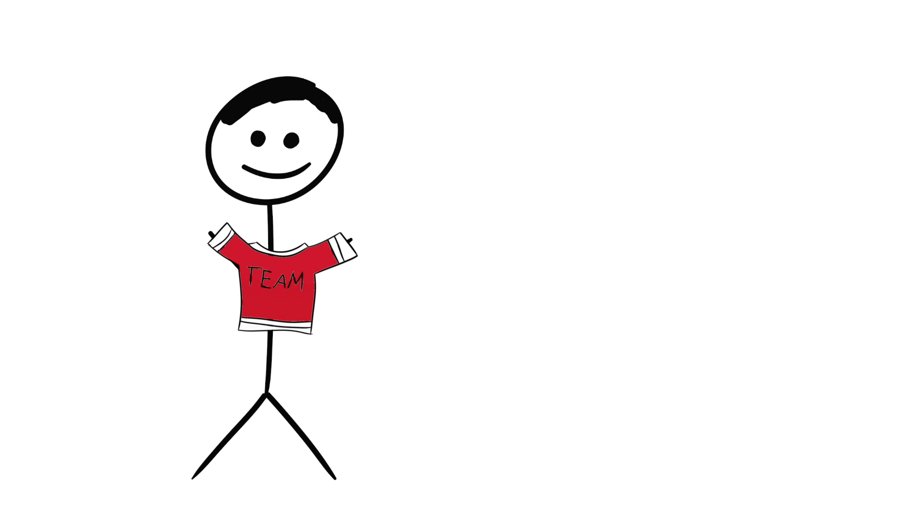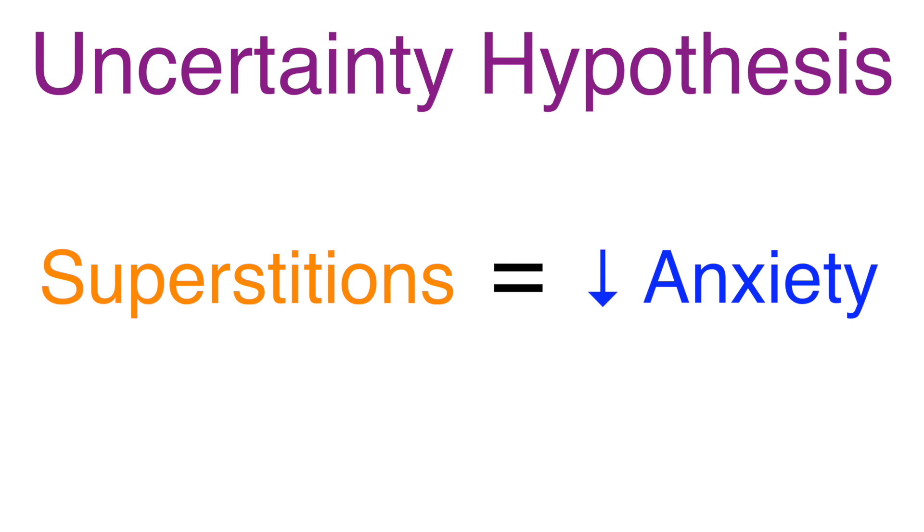People know that wearing their team's jersey won't affect the game, but doing so makes them feel like they have some part to play in their victory. Under the uncertainty hypothesis, superstitions act as a sort of coping mechanism that can be used for reducing anxiety.